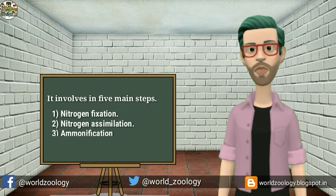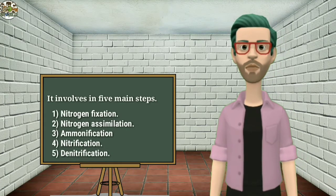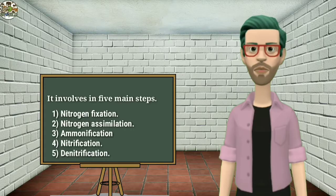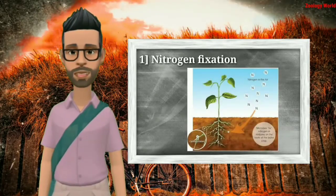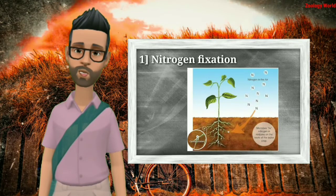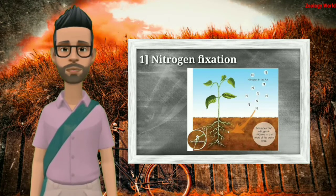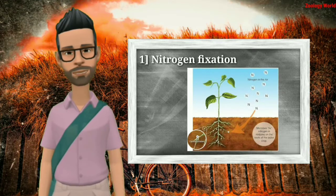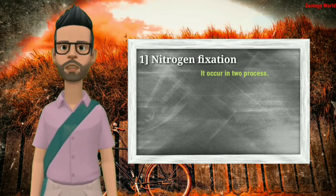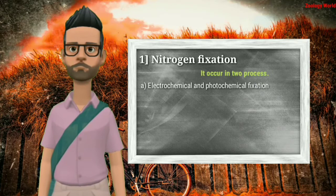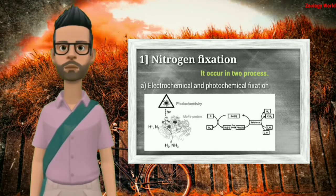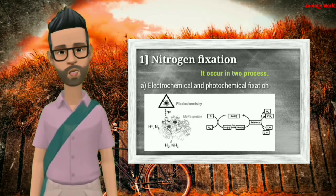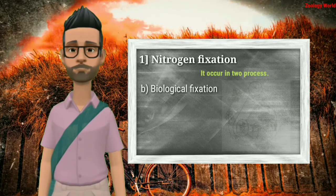The nitrogen cycle involves five main steps: nitrogen fixation, nitrogen assimilation, ammonification, nitrification, and denitrification. Nitrogen fixation is a process through which nitrogen from the non-living world is introduced into the living system. It occurs through two processes: electrochemical and photochemical fixation, which takes place by means of lightning flashes in the atmosphere when nitrogen is oxidized to nitrogen oxide.